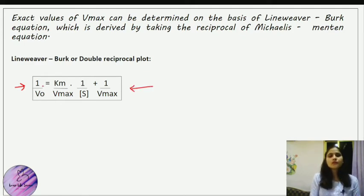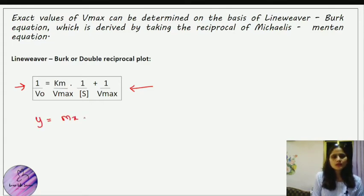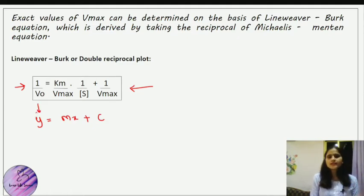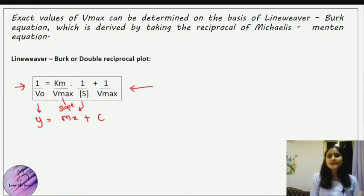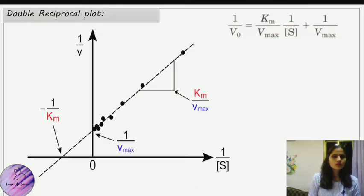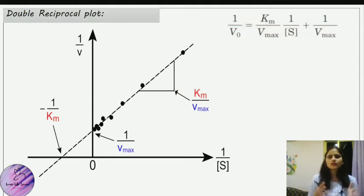After taking the reciprocal of the Michaelis-Menten equation, the Lineweaver-Burk equation becomes: 1/V0 = (Km/Vmax) × (1/[S]) + 1/Vmax. This is of the form y = mx + c, where 1/V0 is plotted on the y-axis, 1/[S] on the x-axis, the slope (m) is Km/Vmax, and the y-intercept (c) is 1/Vmax.